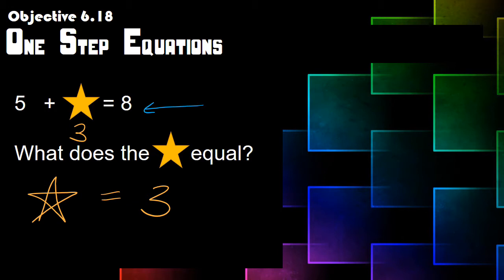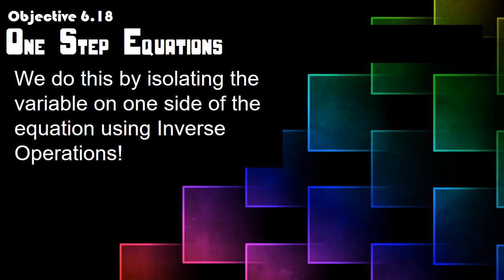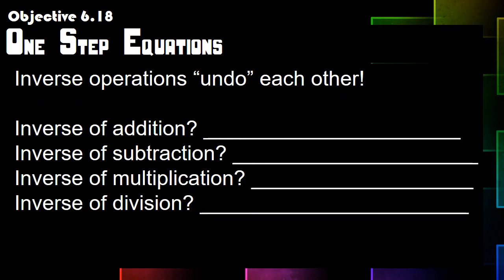All we're going to do now is substitute that star for a letter. I know it's not as fun and exciting as seeing a smiley face or a star, but that's what we're dealing with in one-step equations as an introduction to algebra. We're going to try to get the variable on one side of the equation, and we use a term called inverse operations.